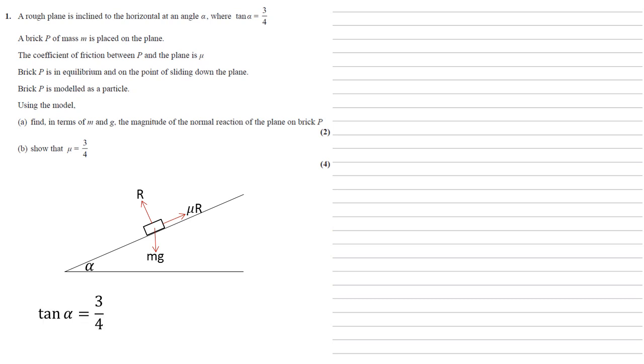We've also been told that tan alpha equals three quarters. We can use this to get cos and sine of alpha. So if you think of this as a right angle triangle, as tan is opposite over adjacent, we can put our three and our four in on the triangle.